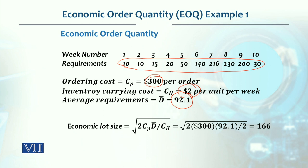Based on the EOQ formula — 2 times ordering cost divided by carrying cost — the value comes out to 166 units. So the economic lot size is 166, meaning every time we place an order, we will order 166 units.